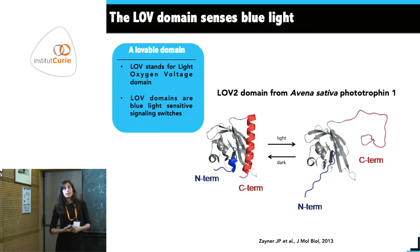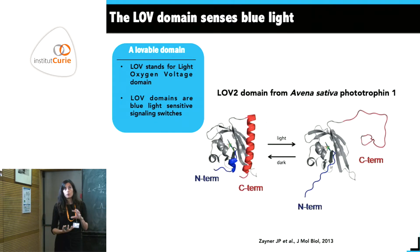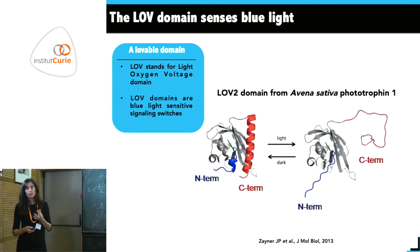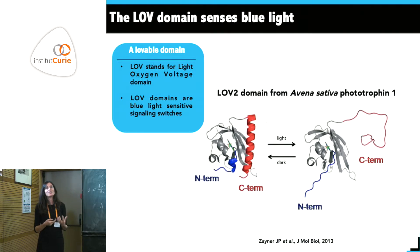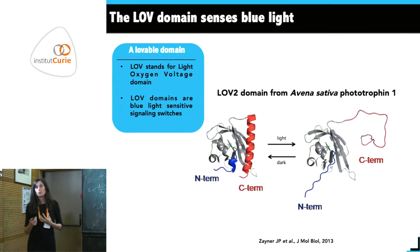Both helices unfold and move farther away from the LOV core domain after arrival of blue light. This is quite interesting because if you engineer the protein in the right way, you can use this unfolding to release either a function or a peptide with light.